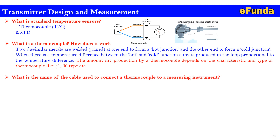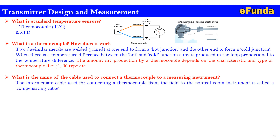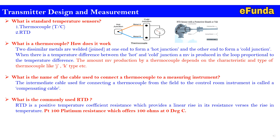What is the name of the cable used to connect a thermocouple to a measuring instrument? The intermediate cable used for connecting a thermocouple from field to the control room is called a compensating cable. What is RTD and what is the commonly used RTD? RTD is a positive temperature coefficient resistance which provides a linear rise in its resistance versus the rise in temperature. PT100 is a platinum resistance that offers 100 ohms at 0 degrees Celsius.